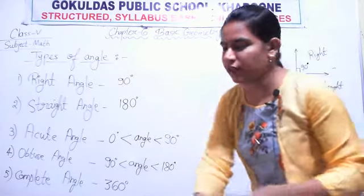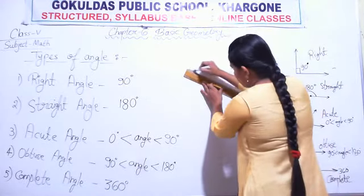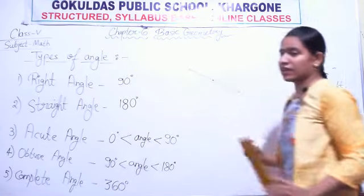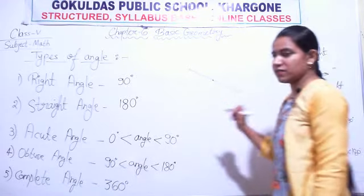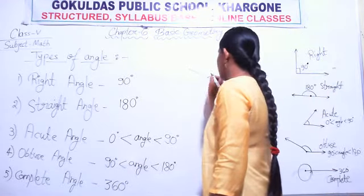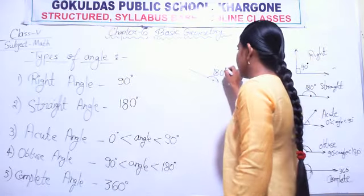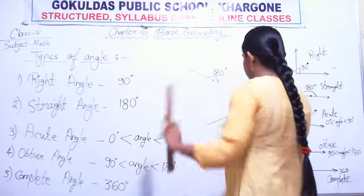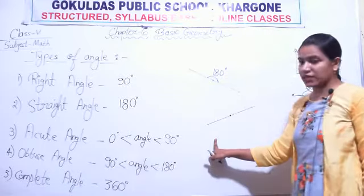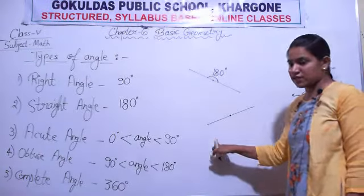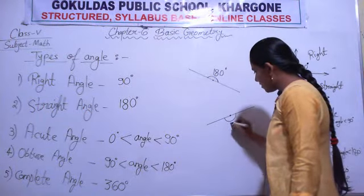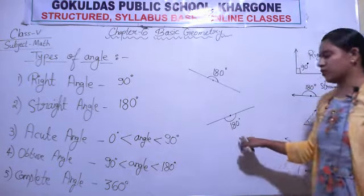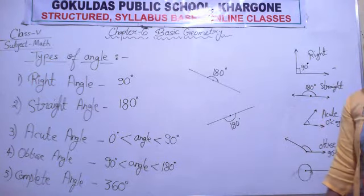Always remember: on a straight line, the angle measure is 180 degrees — a straight angle is formed. Whether I draw the straight line horizontally or at any orientation, it is still a straight line, so the angle between the two arms is 180 degrees.